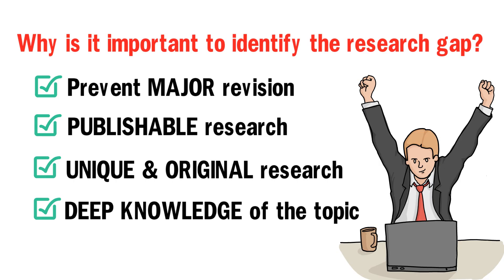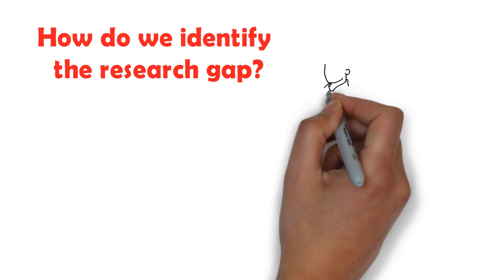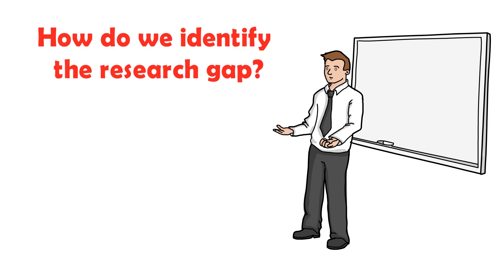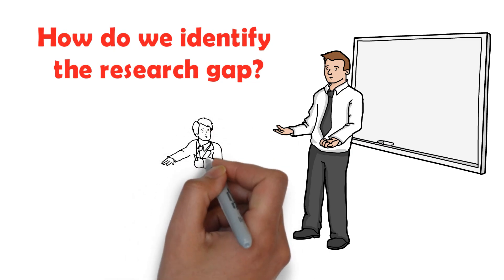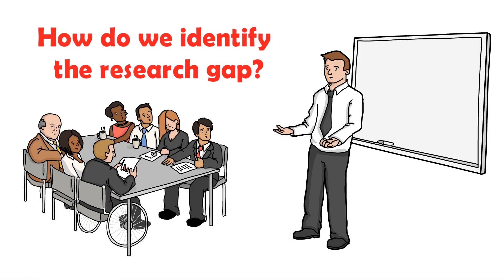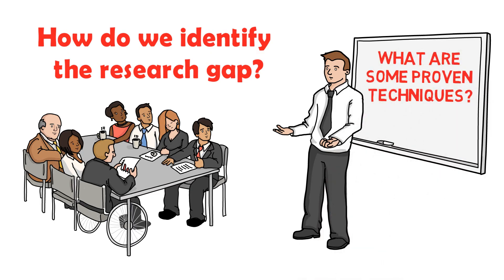Now that we have briefly discussed the nature and meaning of a research gap and its importance, the next question is: how do we identify the research gap? For experienced researchers, because they already have broad and deep knowledge in their chosen field of specialization, they can easily identify a research gap. However, for fledgling scholars as well as masters and doctoral students, identifying a research gap is never an easy feat. But the application of some proven techniques will help ease the process. There are a number of techniques, but the three points raised in this discussion are the most effective ones.